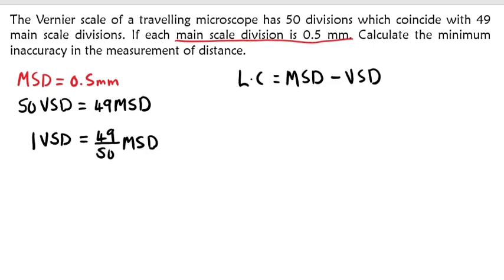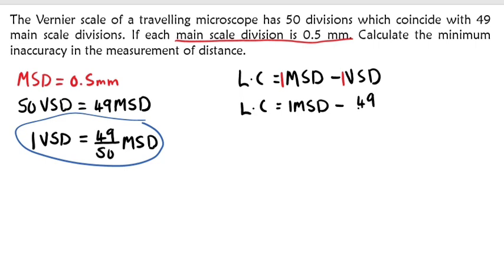Both of these are representing a quantity of 1. Where there's one vernier scale division, we can replace it with what we have here. I'll replace it with this equation. The least count will be 1 main scale division minus 49 over 50 main scale division.